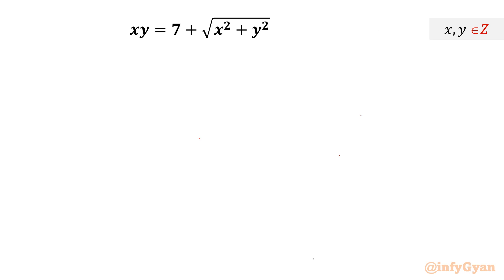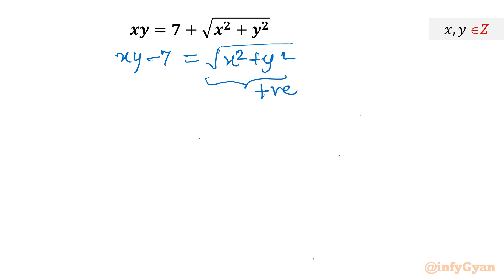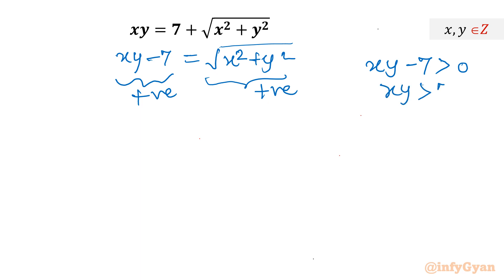Let's get started by rearranging our equation as xy minus 7 equals the square root of x² plus y². The right-hand side is always positive, so the left-hand side should be positive also. Therefore, xy minus 7 must be greater than 0, meaning the product xy must be greater than 7. We will apply this condition before writing our final answer — if xy is not greater than 7, the solution is extraneous.